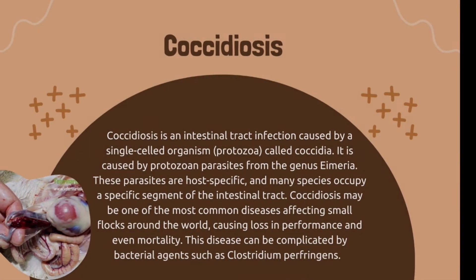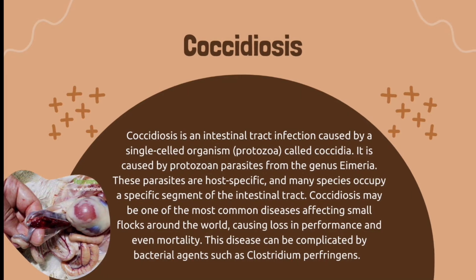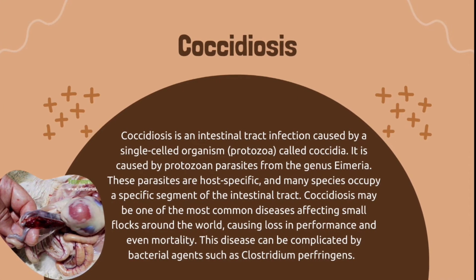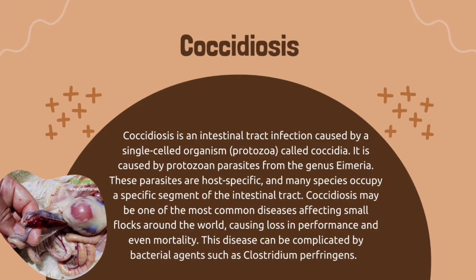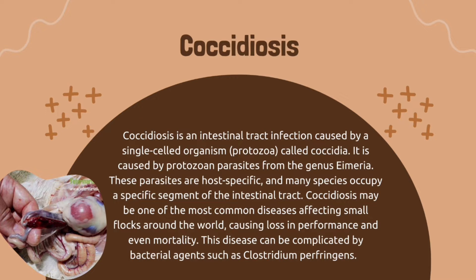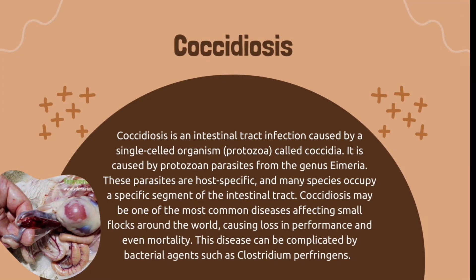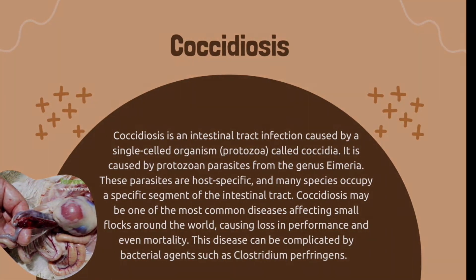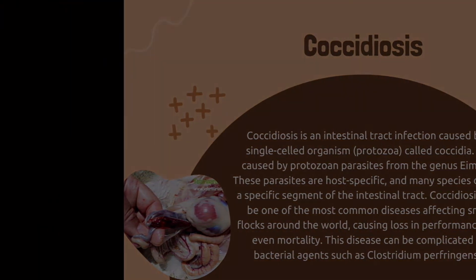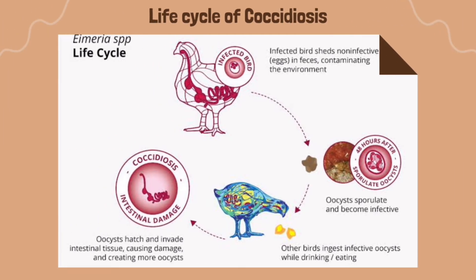Coccidiosis is an intestinal tract infection caused by a single-celled organism called coccidia. It is caused by protozoan parasites from the genus Eimeria. These parasites are host specific and many species occupy a specific segment of the intestinal tract. Coccidiosis may be one of the most common diseases affecting small flocks around the world, causing loss in performance and even mortality. This disease can be complicated by bacterial agents such as Clostridium perfringens.